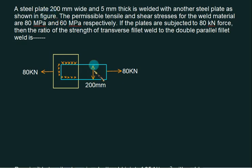A steel plate 200mm wide and 5mm thick is welded with another steel plate. The permissible shear stress is 60 MPa. The plates are subjected to a force of 80 kN, and we have to calculate the ratio of the strength of transverse weld to double parallel. So F transverse by F parallel equals 0.707 times T times 200 times tau divided by 2 times 0.707 times T times this length times tau.